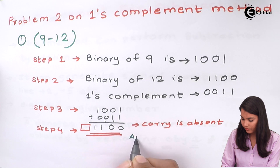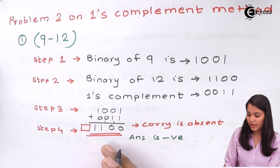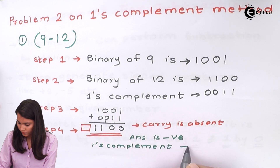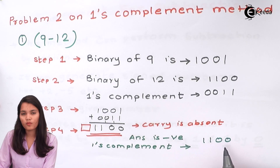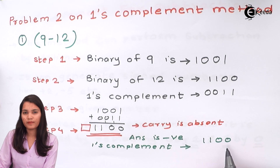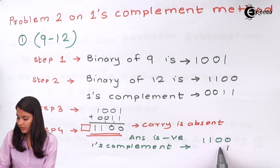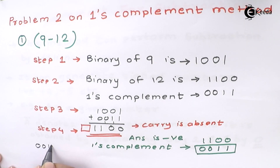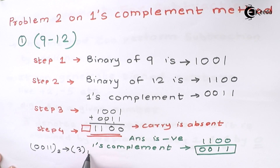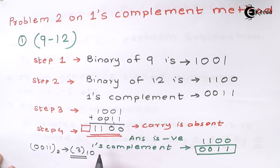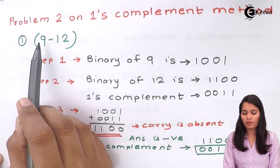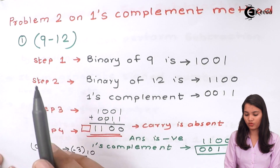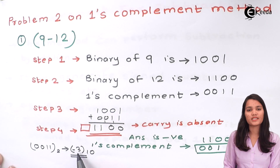We know the answer is negative. To find out the final answer we have to again find the one's complement of the result 1 1 0 0. One's complement means replacing each digit by its opposite, so the one's complement of 1 1 0 0 is 0 0 1 1. This is our final answer. To verify, converting 0 0 1 1 to decimal gives 3. Since the answer is negative, the final answer is minus 3. We can verify this: 9 minus 12 gives minus 3, and here also we are getting minus 3 as the answer. This is verified.